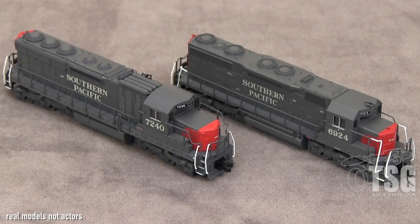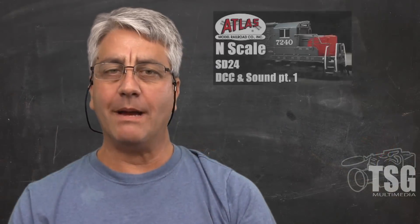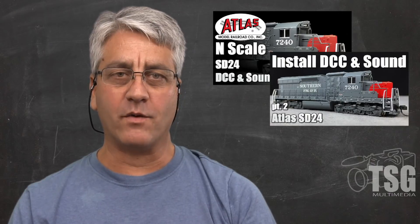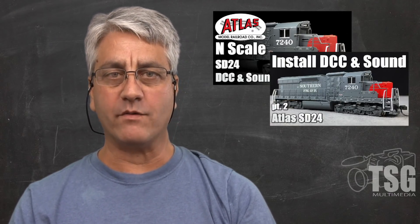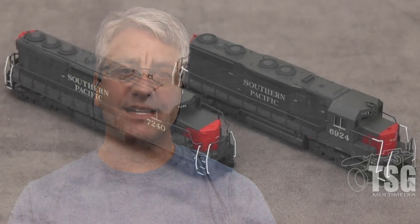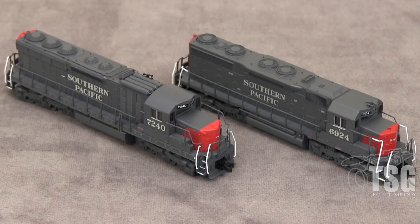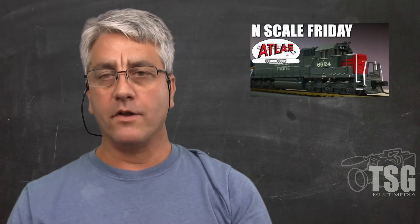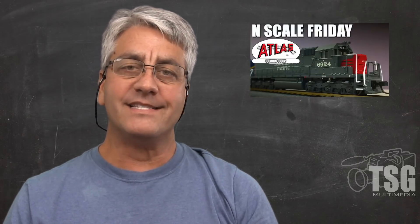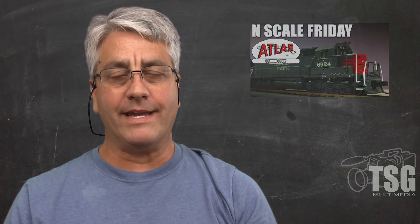For this demonstration, I'm using N-scale locomotives from Atlas. The SD24 on the left is 7240. It was featured on two episodes of John's Models a while back where I installed a sound decoder, then had to troubleshoot a problem I was having with the sound. The other one is 6924, an SD35 that I showed on a recent episode of N-scale Friday. I've already speed matched my SD24 to the other locomotives in my fleet, but the SD35 hasn't been altered in any way yet.